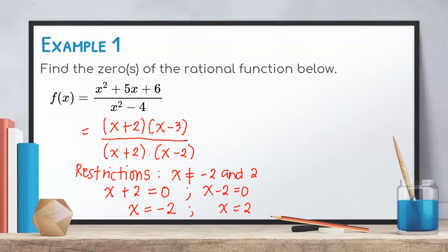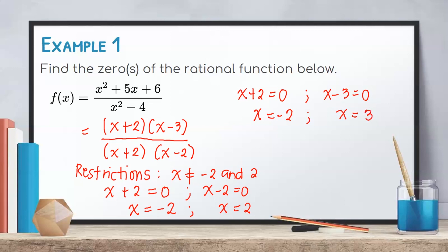If the denominator becomes zero, then the whole rational function will be undefined. Now, let us determine the values of x that will make the numerator equal to zero. We equate the factors of the numerator to zero: x + 2 = 0 and x - 3 = 0, giving us x = -2 and x = 3.